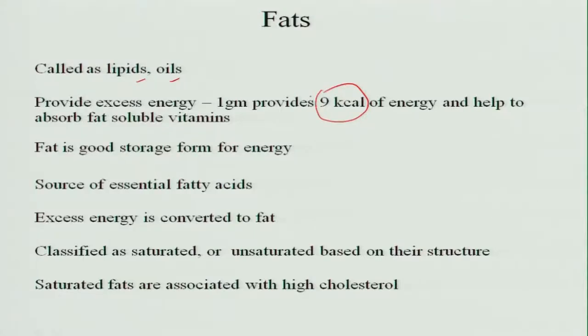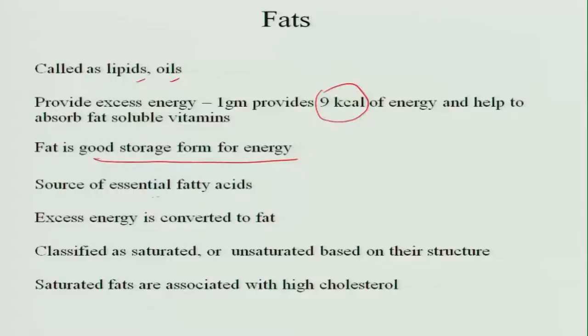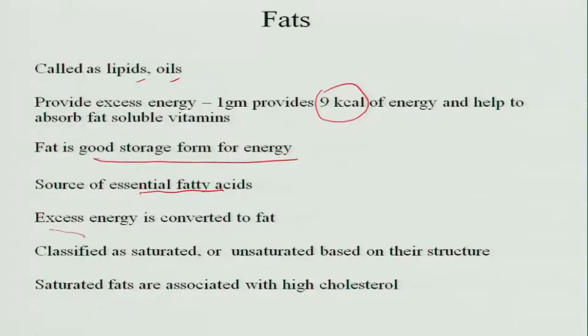The main function of fat is also to absorb fat-soluble vitamins. It is a good storage form of energy — when we have fat in the body it provides nutrition when we are under starvation. Fat is also a main source of essential fatty acids, which are very useful for the maintenance of cell walls in the body. Essential fatty acids are required for very important body functions and must be supplied from food. They are not synthesized in the body. Whenever we have an excess amount of carbohydrates in the food, these are converted into fat and stored in the body as adipose tissue.